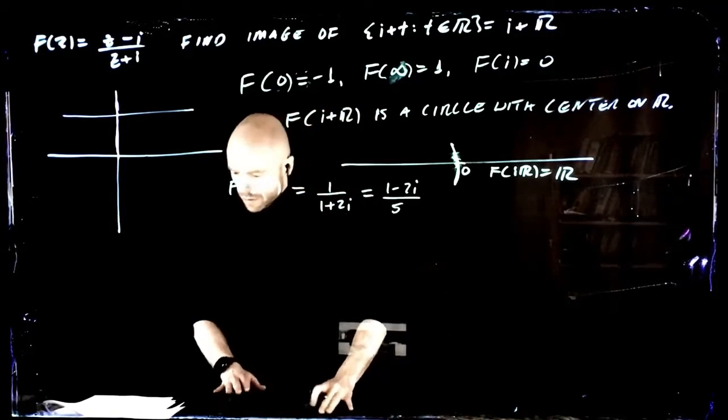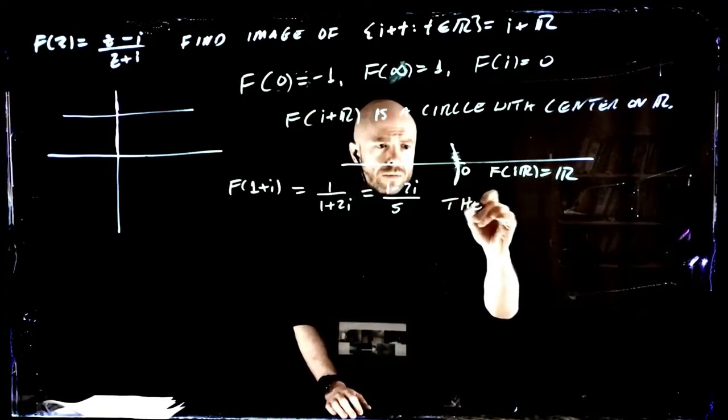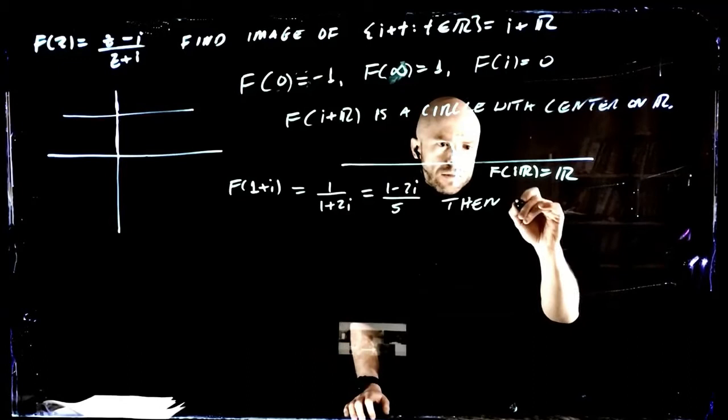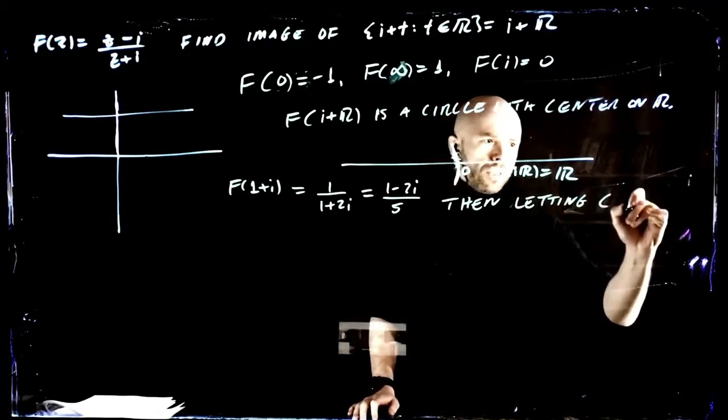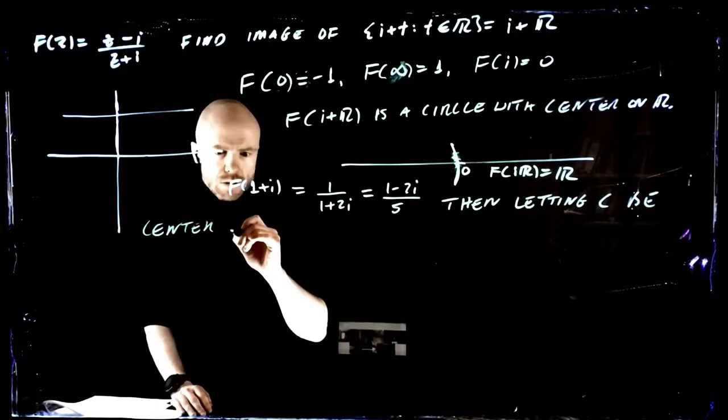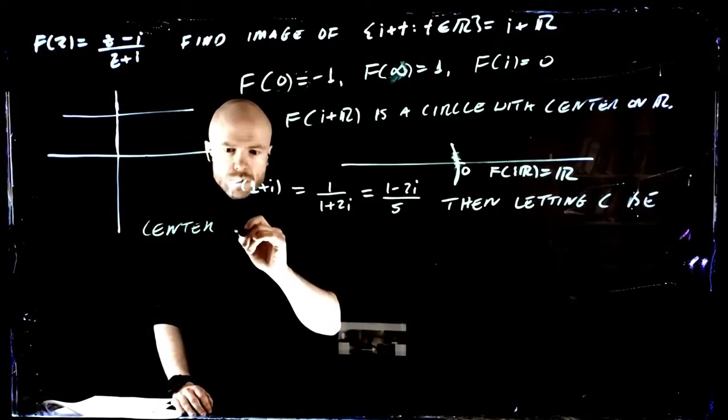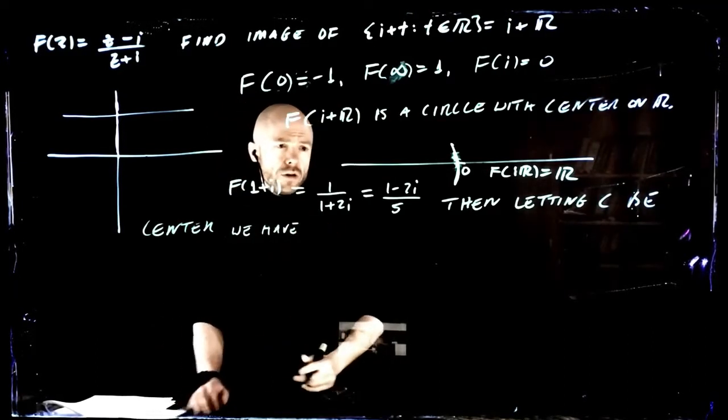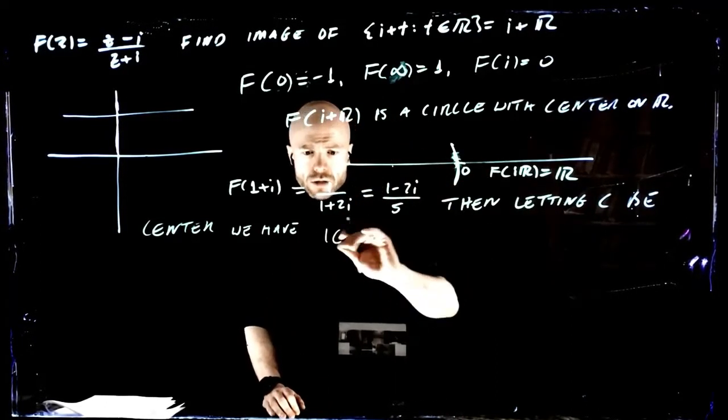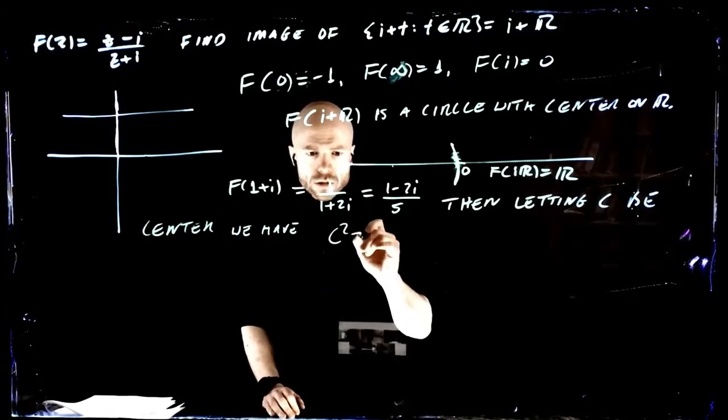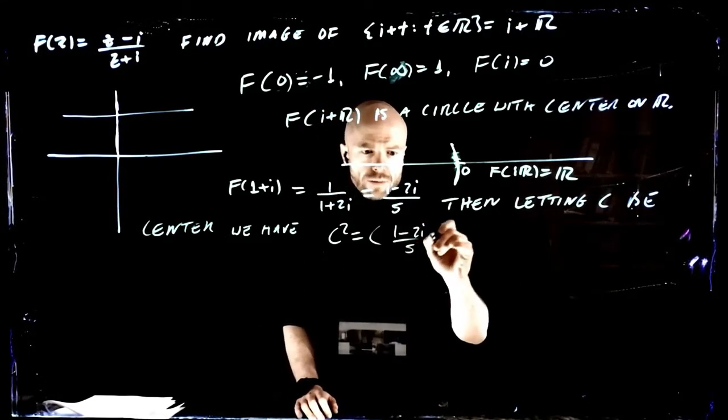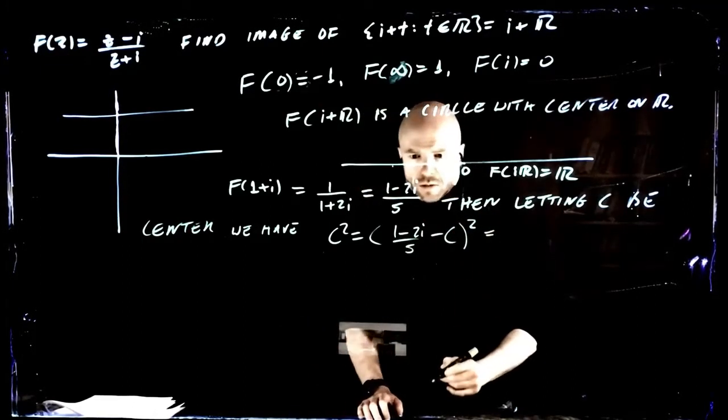Let's do our complex conjugate stuff. So letting C be the center of the circle, we have that the distance of C to zero is just C squared. It's going to be the same as the distance of the center away from this point, which is 1 minus 2i over 5 minus C squared.